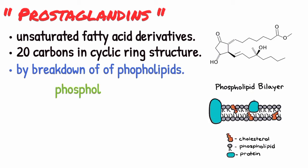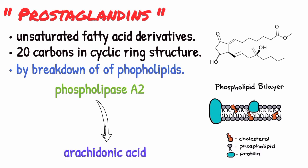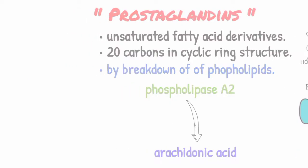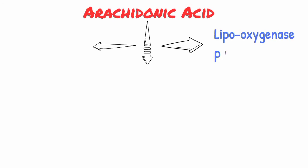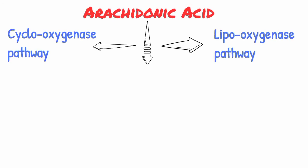The enzyme phospholipase A2 helps break down the phospholipid bilayer and create arachidonic acid. Arachidonic acid then divides into two main pathways: the lipoxygenase pathway and the cyclooxygenase pathway.